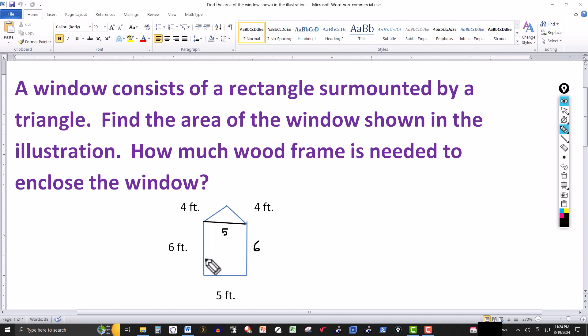So it should be clear that the area of the window can be found by finding the area of the rectangle, which is straightforward. Thirty square feet would be the area of the rectangle. Length times the width. So that's six times five.